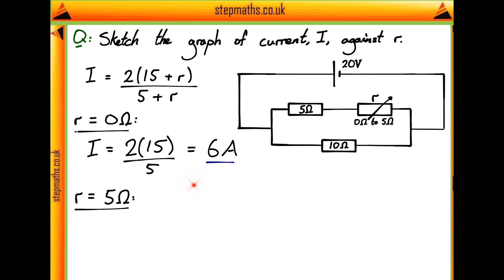Doing the same thing with the upper range of the resistance, 5 ohms, then we should just get that I equals 2 multiplied by 15 plus 5, or 20, divided by 5 plus 5, which is 10. So of course this is just 40 divided by 10, or 4 amps.